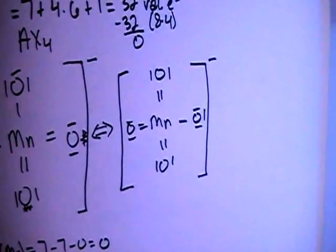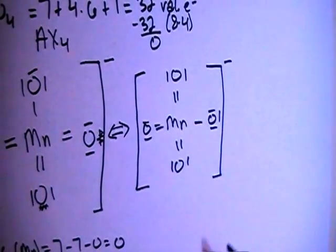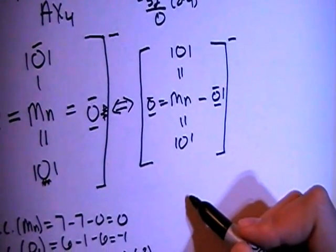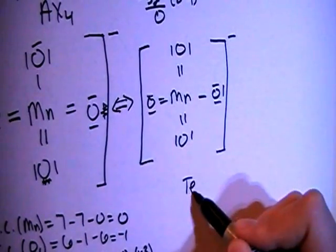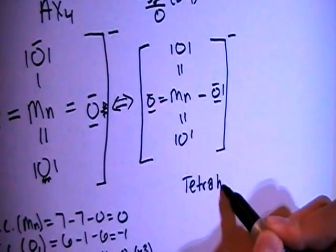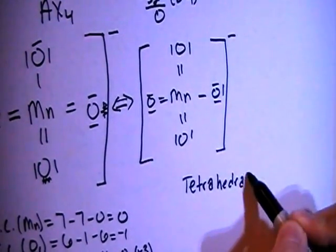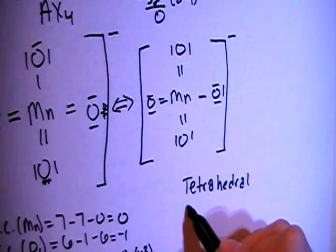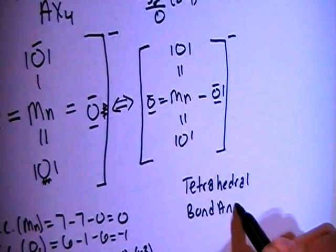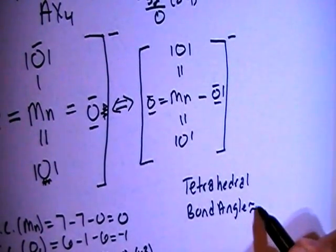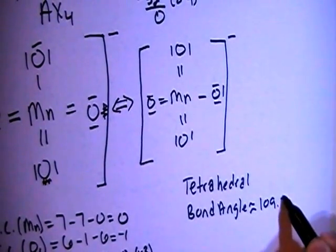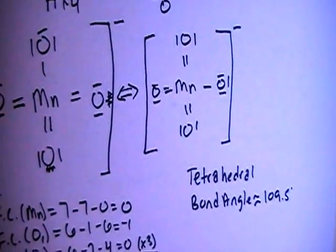Now, in terms of shape, with the AX4, that means that this is going to be a tetrahedral shape. And when you have the tetrahedral shape, the bond angle is going to be approximately 109.5 degrees.